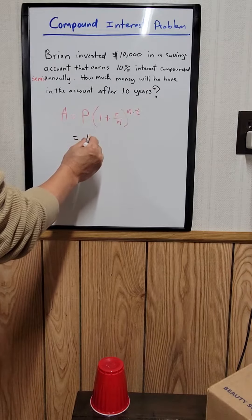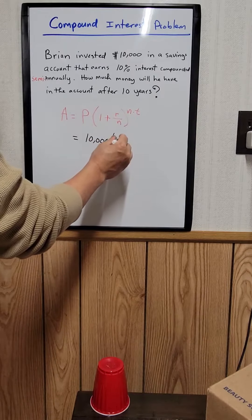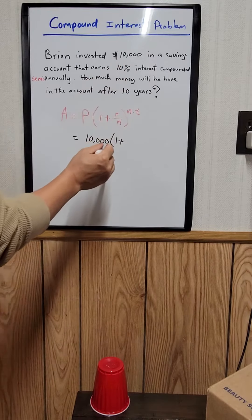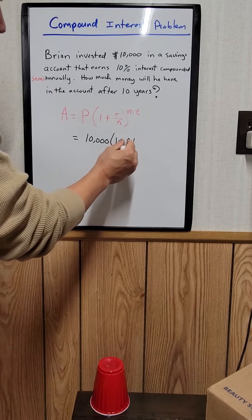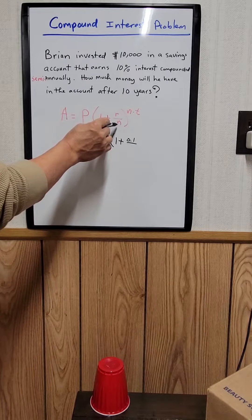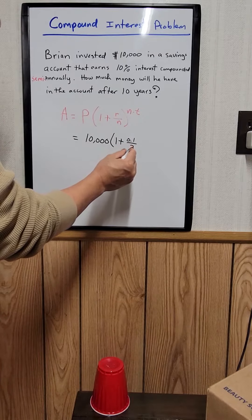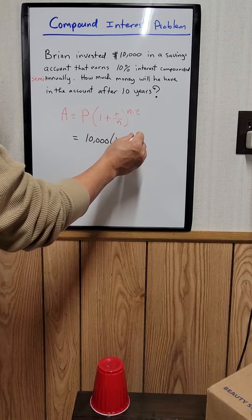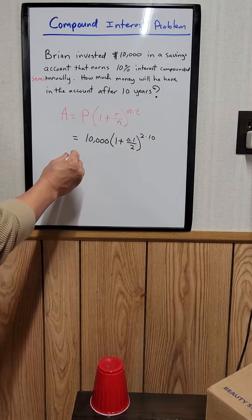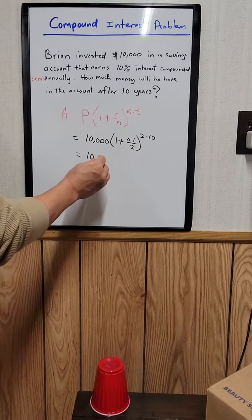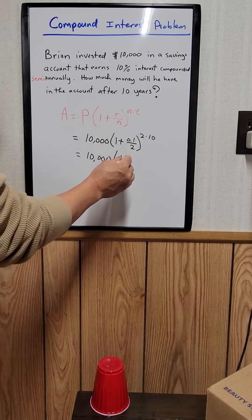The principal P will be 10,000. Then 1 plus R, where R is 10% which converts to 0.1. M stands for the number of times compounded—semi-annually means two times per year, so M equals 2. The time is 10 years. So we have 10,000 times (1 plus 0.1 divided by 2), which equals 1.05, raised to 2 times 10, which is 20.